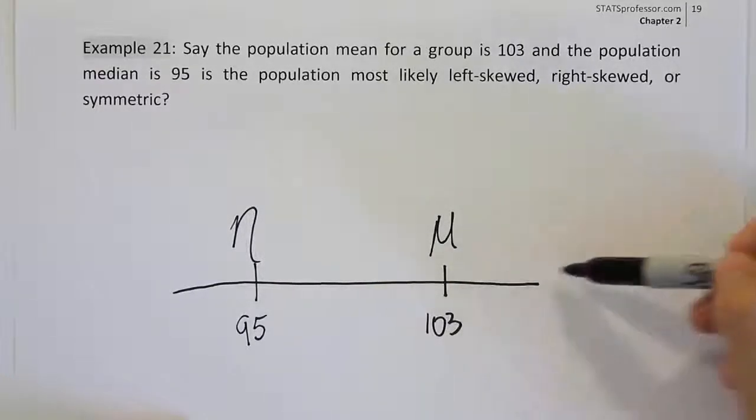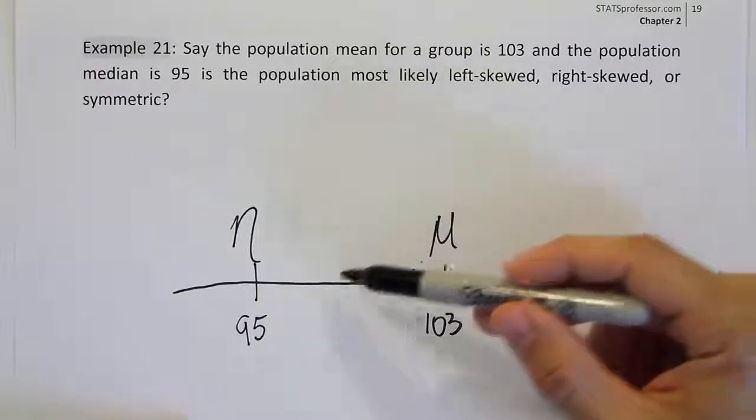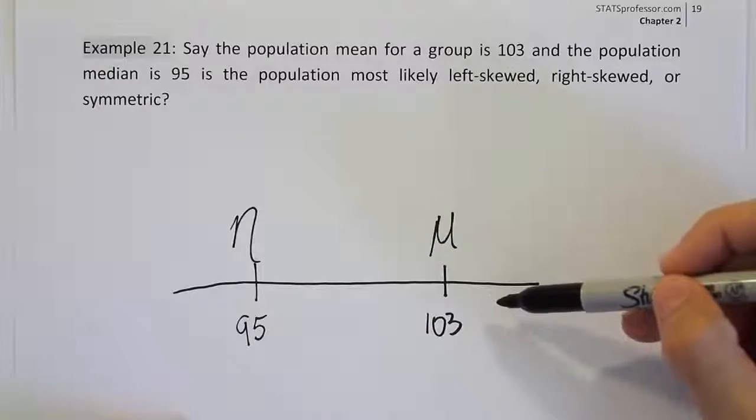So the distribution is most likely right skewed. That's because the skinny tail in a right skewed distribution pulls upon the mean and influences it and it moves over to the right because of the skinny right tail.